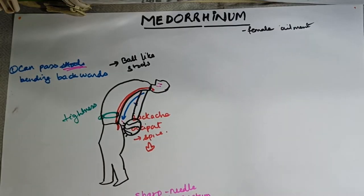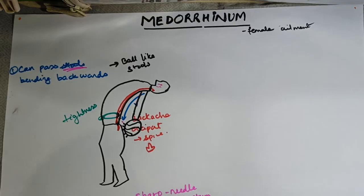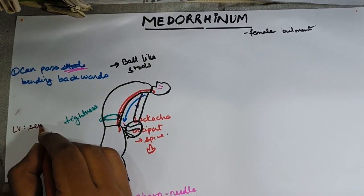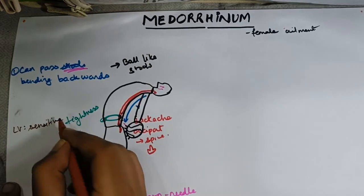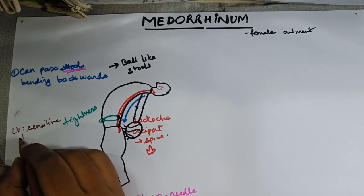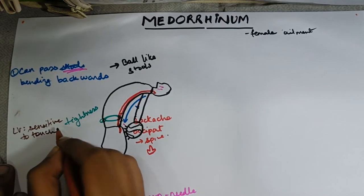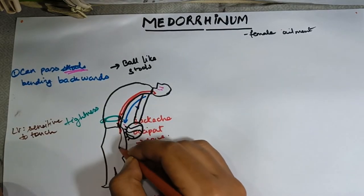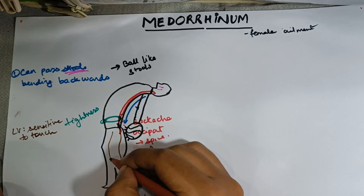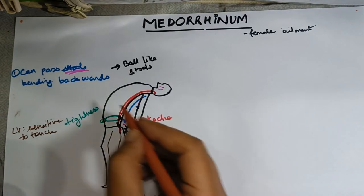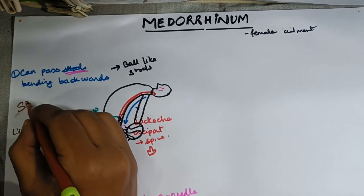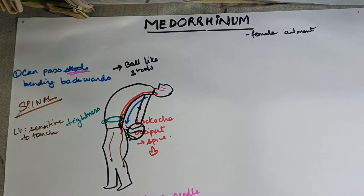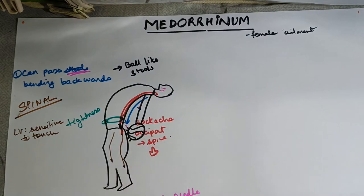Lumbar vertebrae, somewhere over here, is sensitive to touch — it is very sore and sensitive. There is pain from sacrum to coccyx to the whole length of the spine. So you see there are a lot of spinal symptoms as well, which we tend to ignore when it comes to Medorinam.